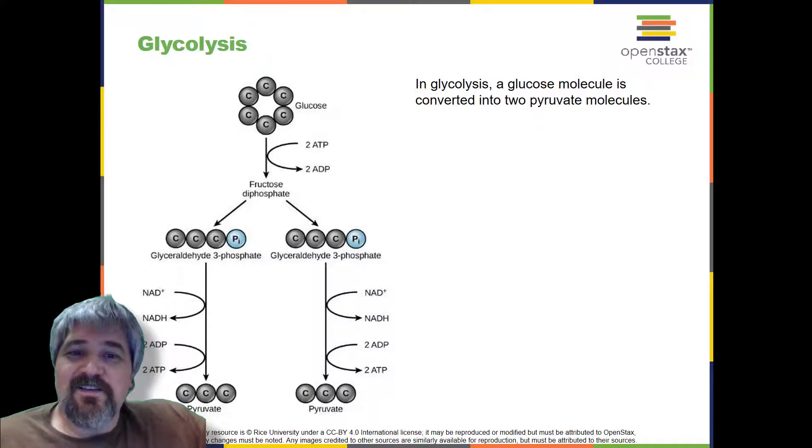Glycolysis consists of two distinct phases. In the first part of the glycolysis pathway, energy is used to make adjustments so that the six-carbon sugar molecule can be split evenly into two three-carbon pyruvate molecules. In the second part of glycolysis, ATP and nicotinamide adenine dinucleotide, NADH, are produced.